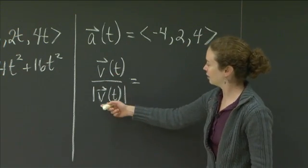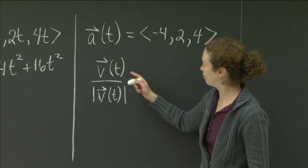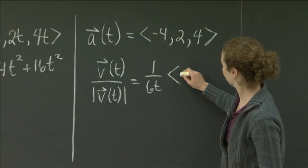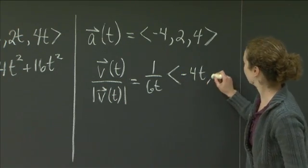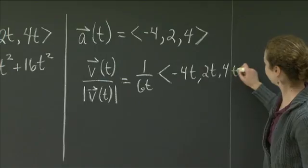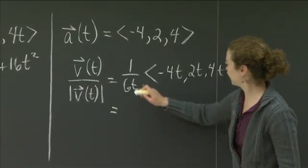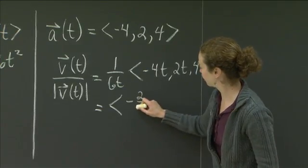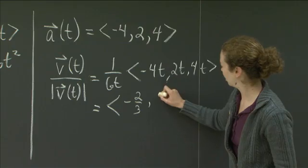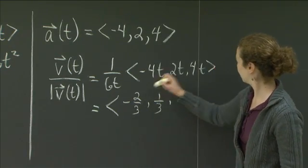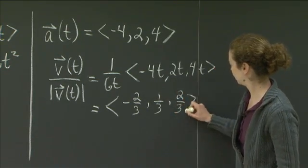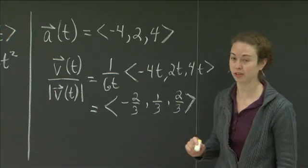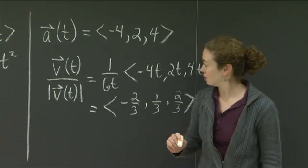So this is a vector, this is a scalar. So I'm going to take 1 over 6t and I'm going to multiply it by <-4t, 2t, 4t>. And this gives me, when I do my division, looks like it gives me -2/3, 1/3, 2/3. So that is the unit tangent vector.